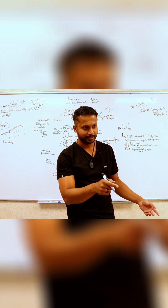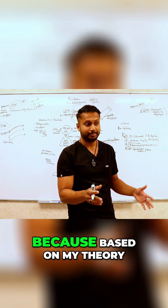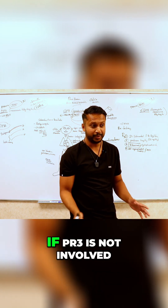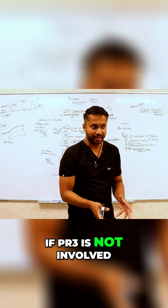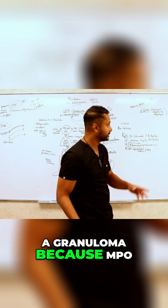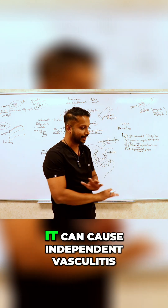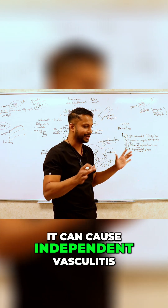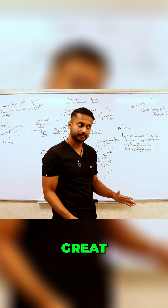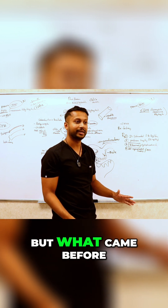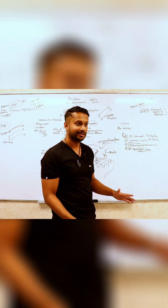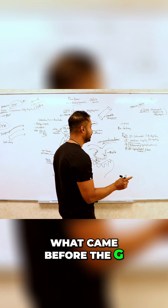That's the question, because based on my theory, if PR3 is not involved you should not have a granuloma, because MPO does not form granulomas — it can cause independent vasculitis. But what came before the G? What came before the G?